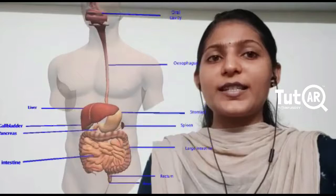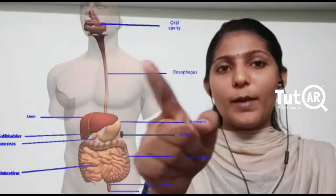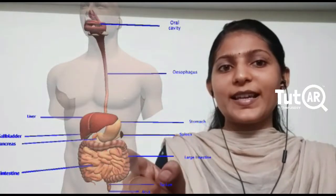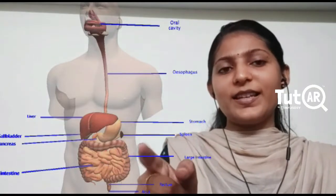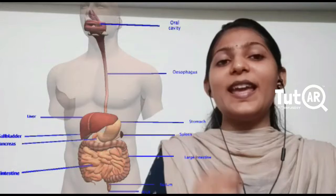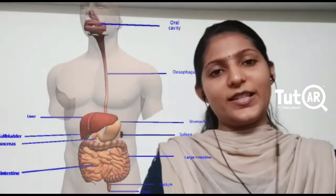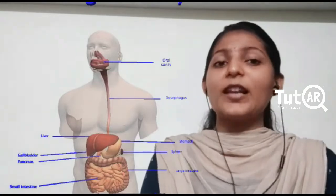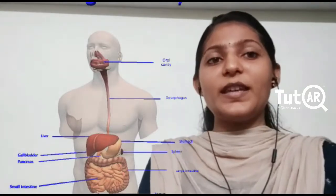So the parts, the different parts of the digestive system includes the mouth, the esophagus, the stomach, the small intestine and the large intestine and finally we have the anal part or the anus. So this is the part of alimentary canal. Now let's go into the details of each part.